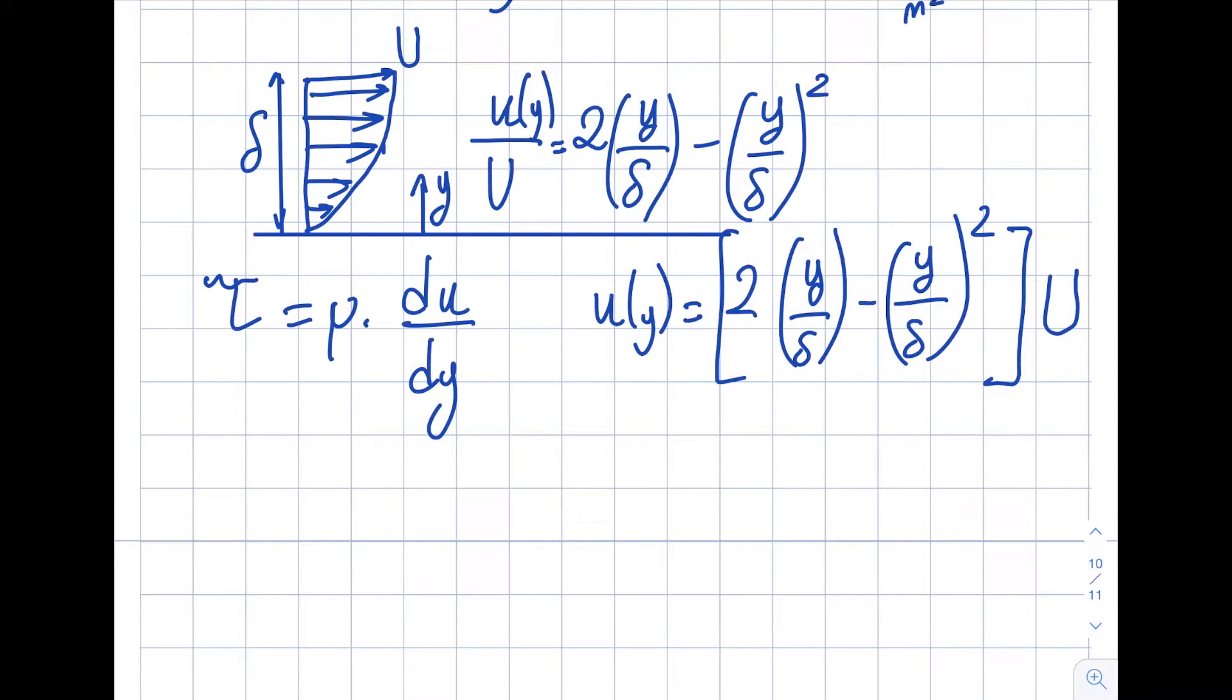I'm interested in du dy, so let's take a look at it. Capital U will be right over here. What will be the derivative of this term? 2 is constant and 1 over delta is constant as well.